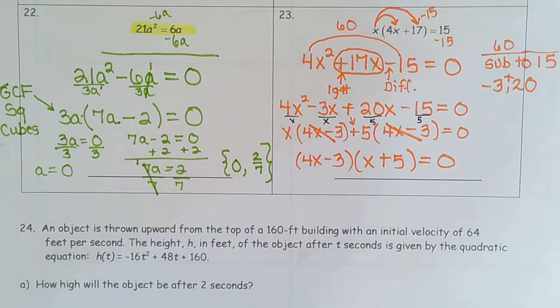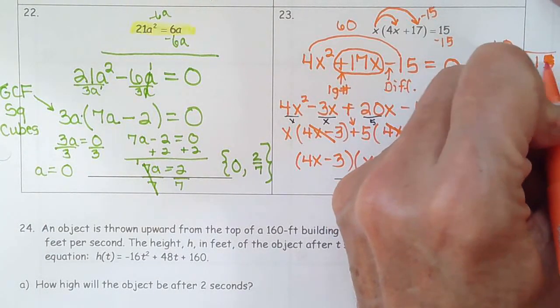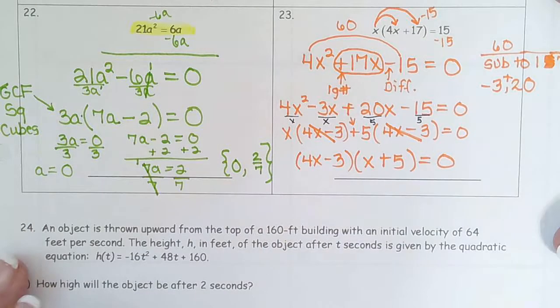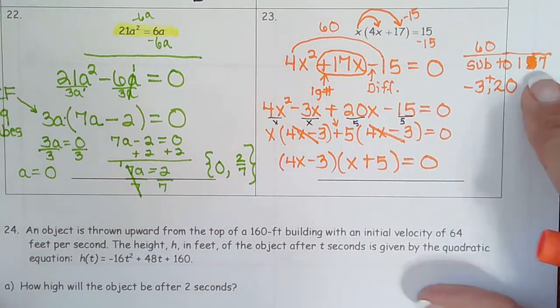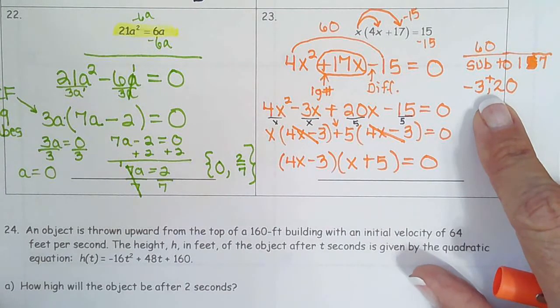oh I can't believe I wrote 15. Good thing I did a quick recap. That was an error. Okay so factors of 16, I saw the 15 and I wrote that, that subtract to 17 and we picked 3 and 20.